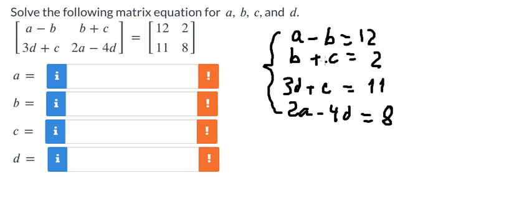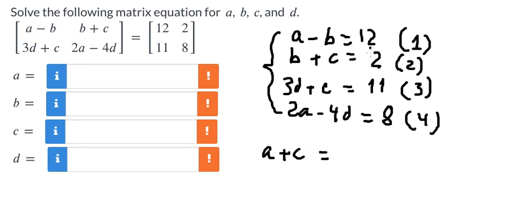Now we need to focus on equation number one and equation number two. We add equation one plus equation two. We can see that b minus b cancels, so a plus c equals 14.